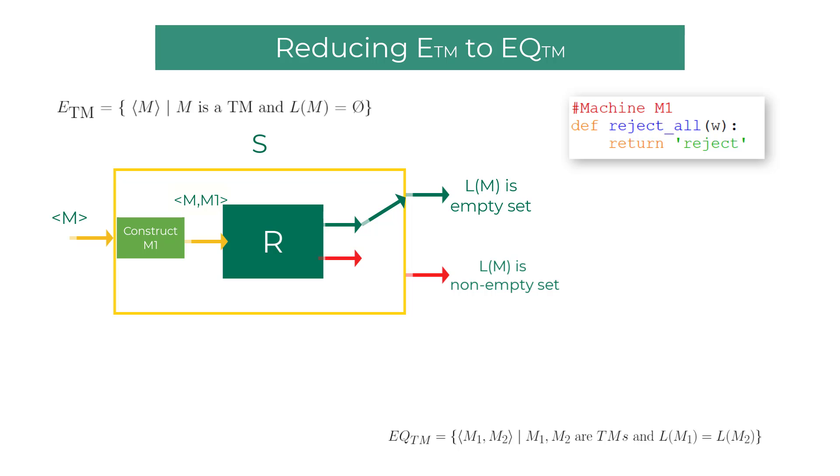If R rejects, then the machine M is not equivalent to reject all Turing machine. Hence, it should be accepting some strings for sure. So we can connect that pin from R with this pin on S. There you go.